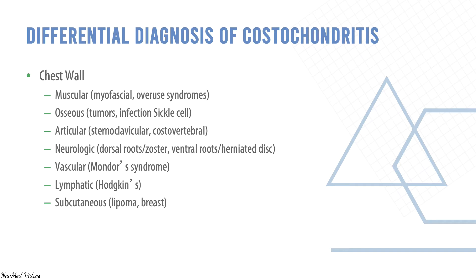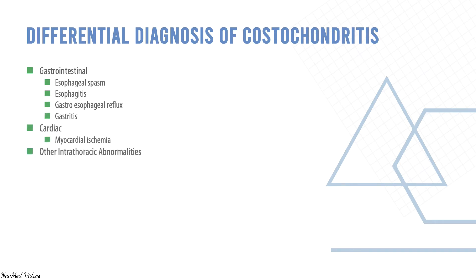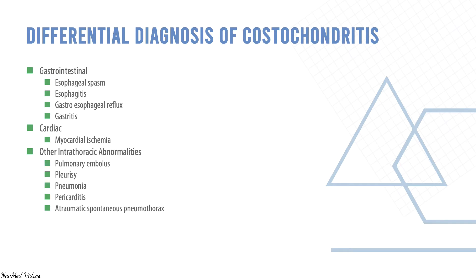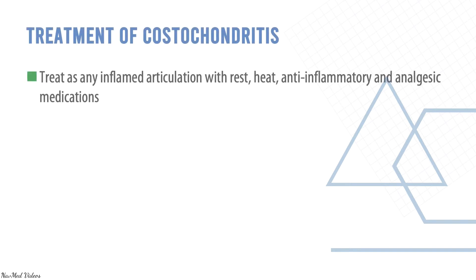Other mimics include gastrointestinal causes such as esophageal spasm, esophagitis, gastroesophageal reflux, or gastritis, and cardiac conditions like myocardial ischemia, as well as intrathoracic abnormalities like pulmonary embolus, pleurisy, pneumonia, pericarditis, and spontaneous pneumothorax. Treatment of costochondritis, like any inflammatory joint condition, is by rest, heat, anti-inflammatory, and analgesic medication.